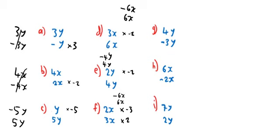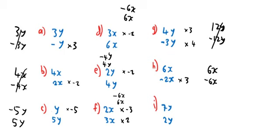The next one: one of them is plus and one of them is minus already, but I've got a 4 and a 3. So what you could do is multiply the bottom one by 4 and multiply the top one by 3. Then you'd get 12y on top and minus 12y on the bottom. The next one: all I have to do is multiply the bottom one by 3, so I'd get 6x and minus 6x. And the last one, probably the most difficult: you'd have to multiply the top one by 2 and the bottom one by minus 7. Or you could multiply the top by minus 2 and the bottom by positive 7. If you do it this way, you'd get 14y and minus 14y, so they cancel out.